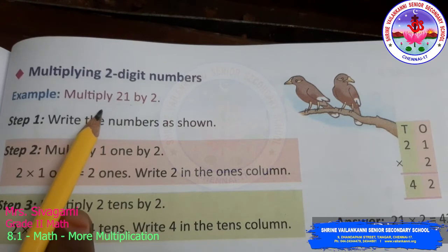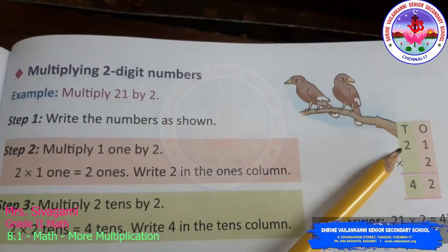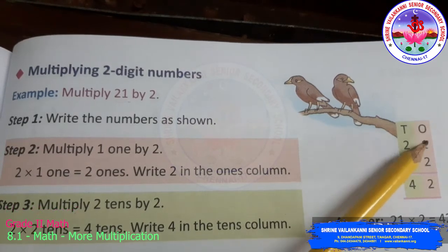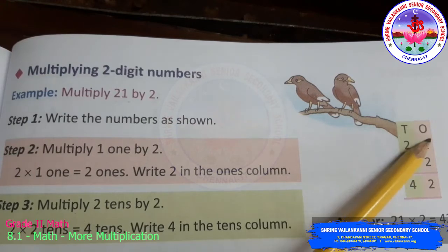This is how you should write the vertical form. First you have to write the tens and ones and write the digits according to their place and you should write it one below the other. 21 into 2, it should come one below the other. You have practiced one digit number. Now it is two digit number.